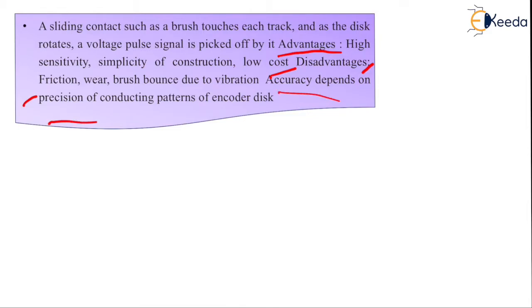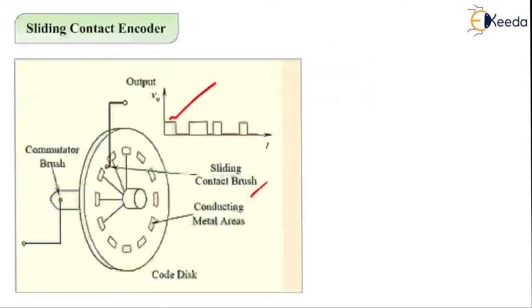Now, what are the disadvantages? The friction, wear, and brush bounce due to vibration are issues. Also, the accuracy depends upon the precision of the conducting pattern of the encoder disk. Due to friction, sometimes it will not give you the desired output, and your accuracy depends upon the precision of the conducting pattern of the encoder disk. These are some disadvantages related to the sliding contact encoder.